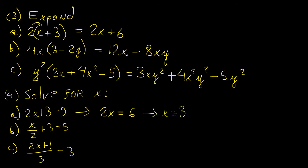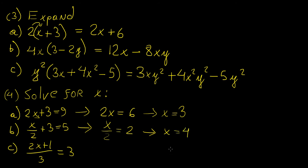We can always check an answer by plugging the value back into the equation: 2 times 3 is 6, plus 3 equals 9 — correct. For the next equation, we subtract 3 from both sides, giving x over 2 equals 2. Then we multiply both sides by 2 so the fraction clears, giving x equals 4.